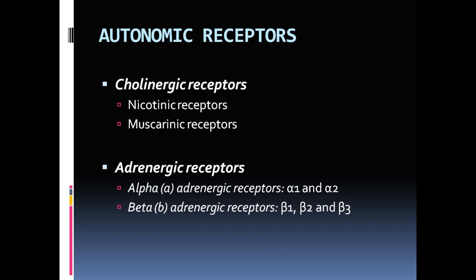Muscarinic receptors are metabotropic receptors present on end organs such as cardiac muscle, pupil muscles, secretory glands, and other end organs supplied by cholinergic neurons. When acetylcholine attaches to a muscarinic receptor, it activates the second messenger system, which can then open ion channels, accumulate enzymes, or cause gene expression inside the cell.